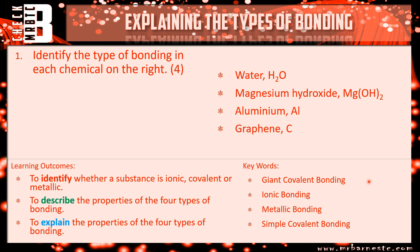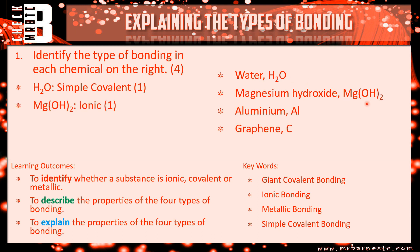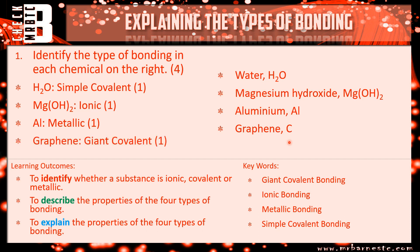Answers to question one: Water H2O — only nonmetals, and only three atoms — simple covalent. Mg(OH)2 — magnesium is a metal, oxygen and hydrogen are nonmetals — ionic. Aluminium Al — just a metal — metallic. Graphene is made up of thousands of carbon atoms; carbon is a nonmetal, therefore covalent — and because it has thousands of atoms, it's giant covalent. Four marks in total.